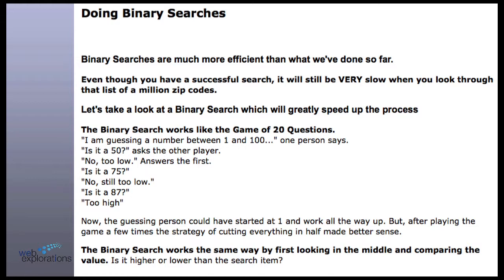So how does a binary search work? I say a number between 1 and 100 — who's going to guess? Who's going to make an intelligent programming guess? He's going to say 50. Why did you say 50? Because it's in the middle. So we go 50, and it's less than 50. What's our next guess going to be? 25.